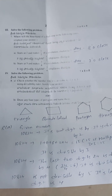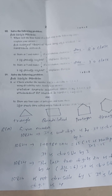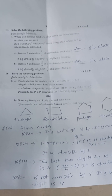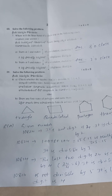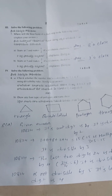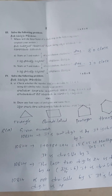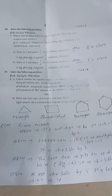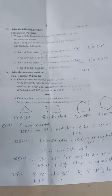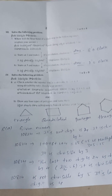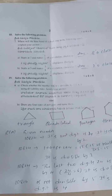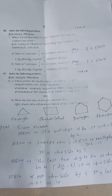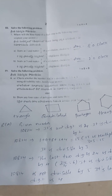Draw any four types of polygons and name them. The four polygons are: triangle, quadrilateral, pentagon, and hexagon. A polygon is a closed curve having more than two sides. Thank you.